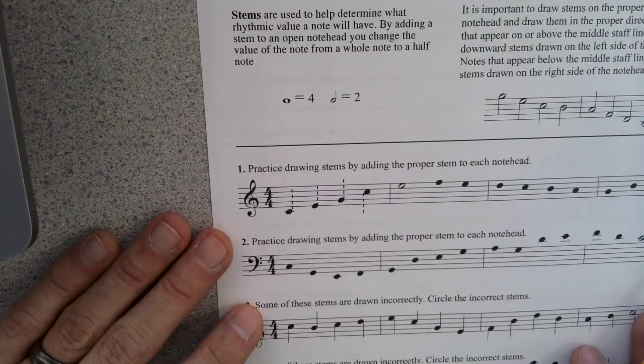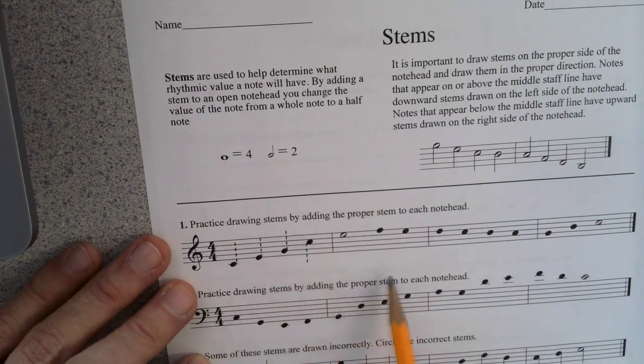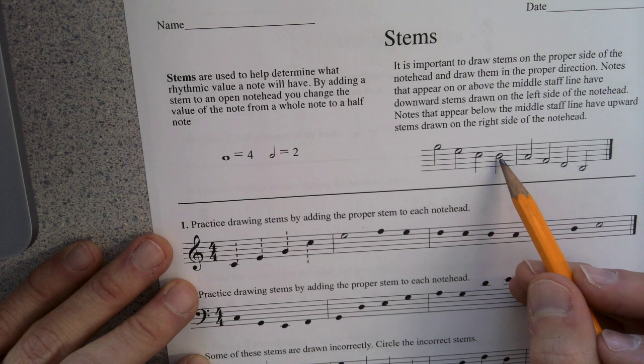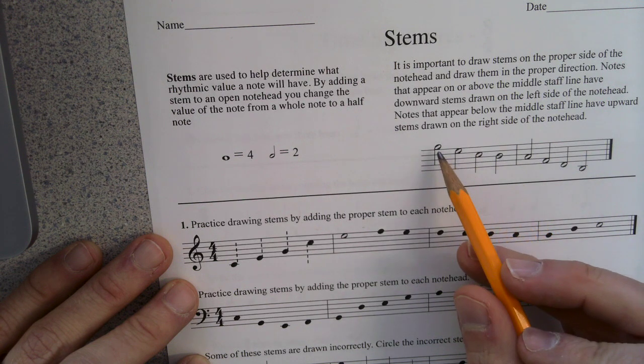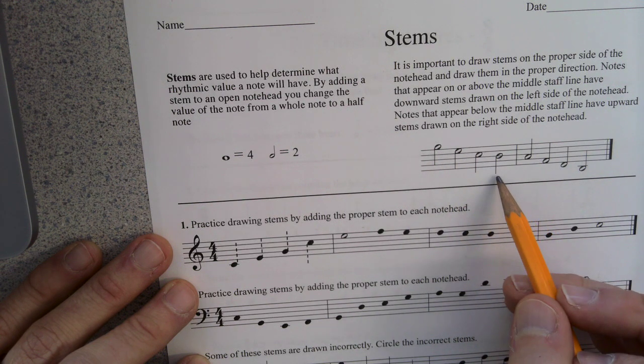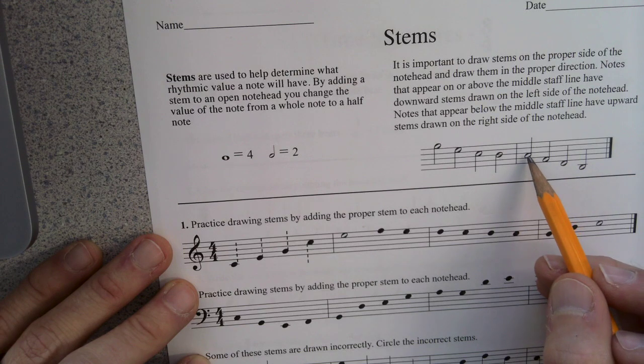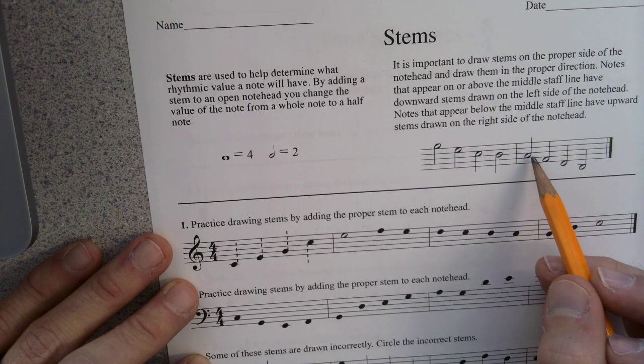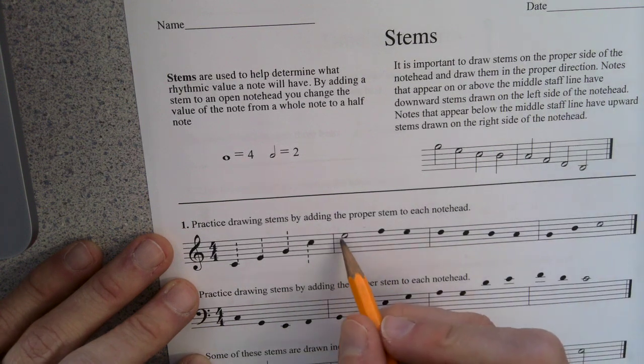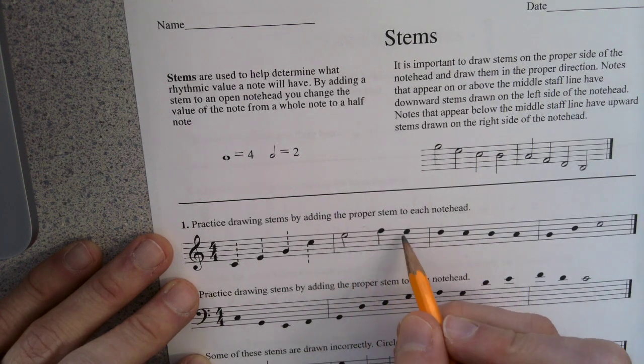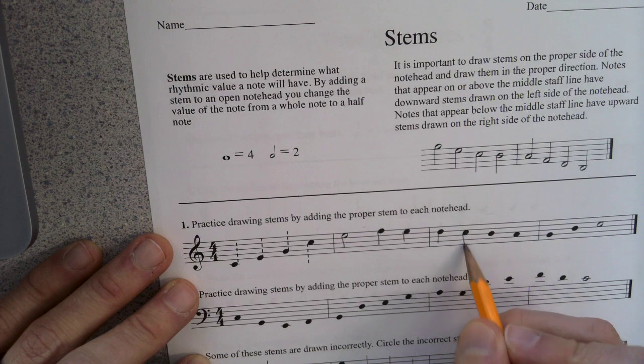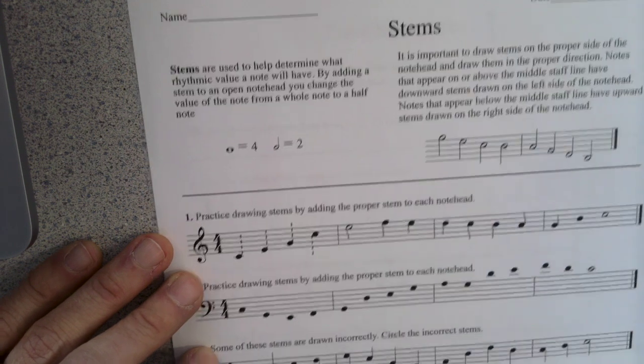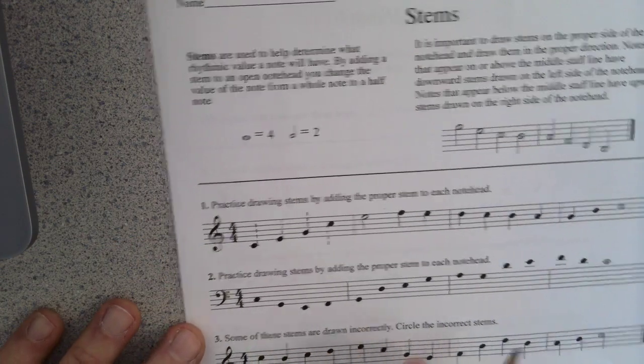Here's number two. This one couldn't be easier. Make these notes look like these notes. If it's on the middle line or above, the stem is on the left hand side going down. If it's here on the second space or below, then the stem is on the right hand side going up. So these are all on the left hand side going down because they're so high. Once you get to here, they're on the right hand side going up. Do the same thing here.